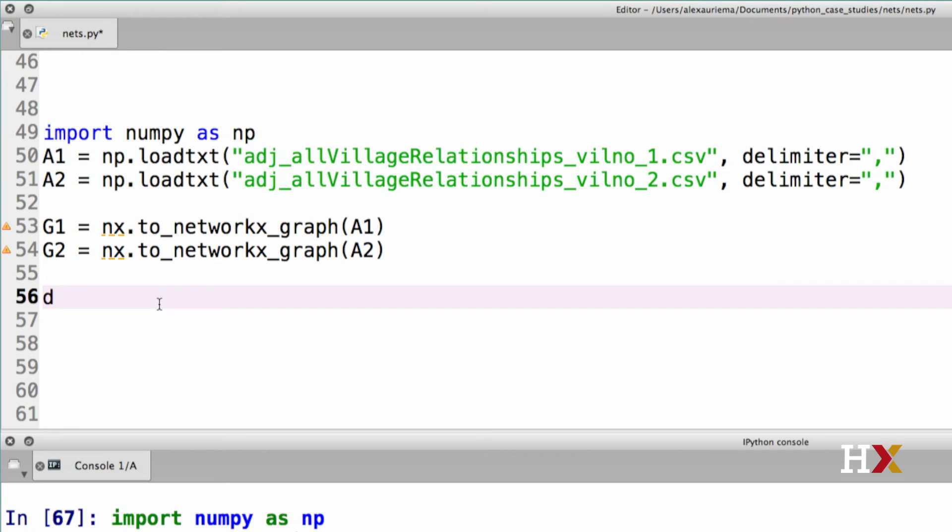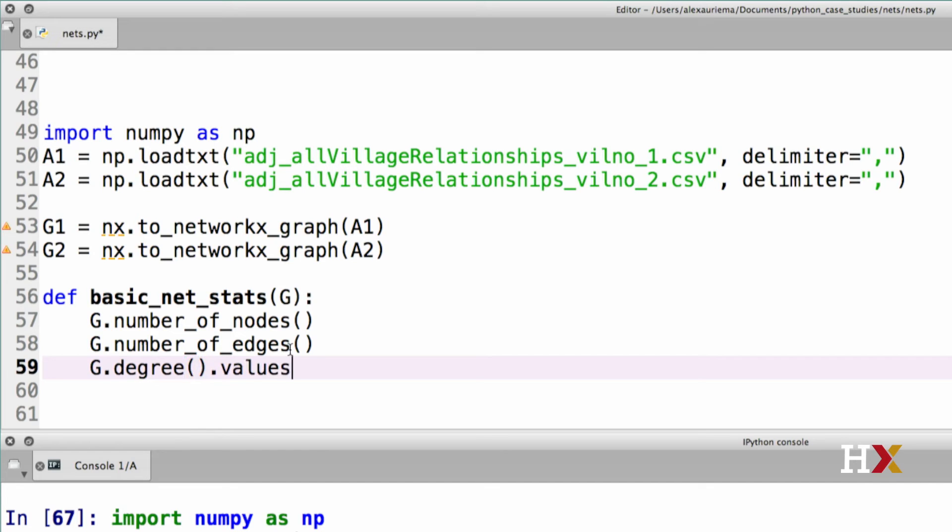We'll write this up as a function. We'll call this basic_net_stats. The only input is going to be our graph G. We're interested in looking at number of nodes. We're also interested in number of edges. And finally, we're interested in the mean degree.